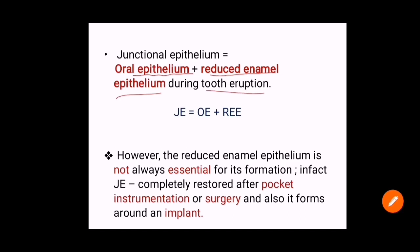The junctional epithelium is formed by the confluence of oral epithelium and reduced enamel epithelium at the time of tooth eruption — a very important point. However, the reduced enamel epithelium is not always an essential prerequisite, because junctional epithelium is completely restored after pocket instrumentation or surgical procedures, and it also forms around an implant.